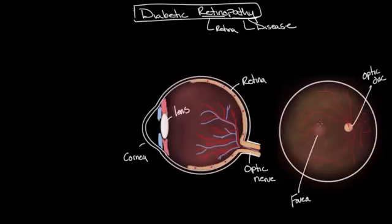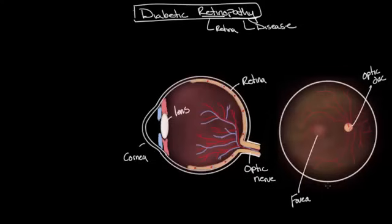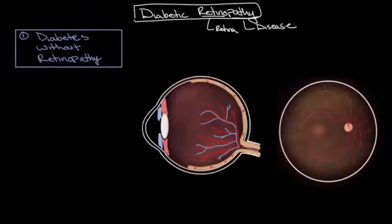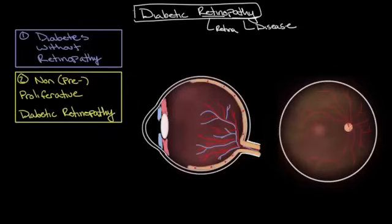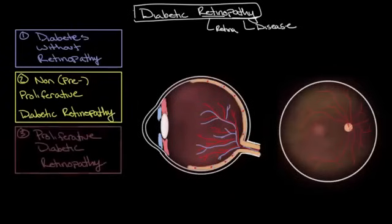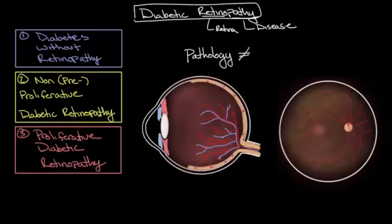You can think of the fovea as producing an HD or high-definition quality image, whereas the more peripheral retina on the outside will produce a much lower quality image. Now that we have a basic general orientation to the eye and the retina, let's use this drawing to discuss the three stages of diabetic retinopathy: diabetes without retinopathy, non- or pre-proliferative diabetic retinopathy, and proliferative diabetic retinopathy. One important thing to note is that these stages are defined by their pathology, not by clinical presentation or symptoms.